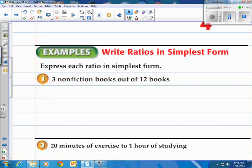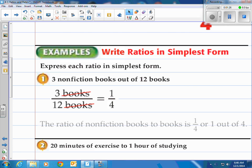In this case it says express each ratio in simplest form. So now we have number one here: three nonfiction books out of twelve books. How do we write that in ratio format? Well it's basically three books to twelve books, so we put three over twelve. That's equal to one fourth. So the ratio of nonfiction books to books is one to four or one out of four.